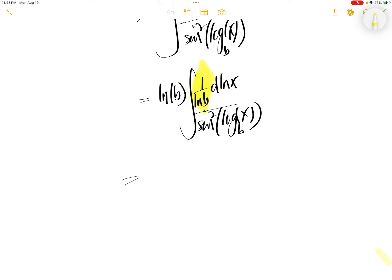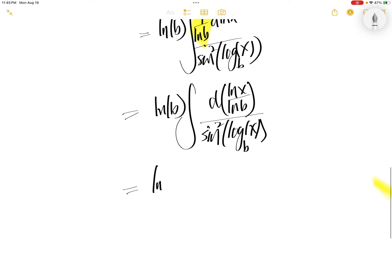Now, we can bring this inside the d ln x, you will get d ln x divided by ln b. Because for a constant, we can bring it out of the derivative or we can bring it into the derivative. Now, you have sine squared of log x to the base b.